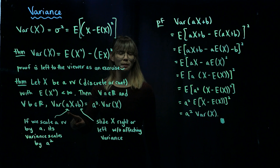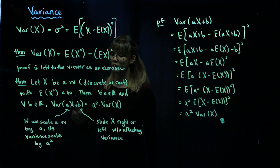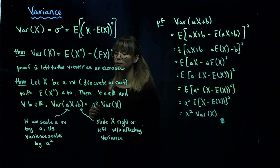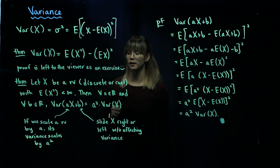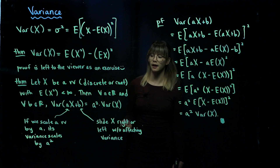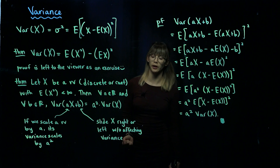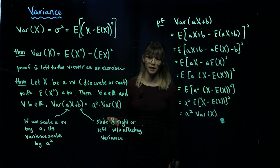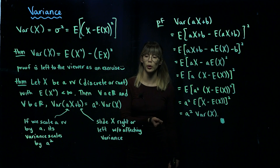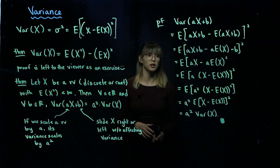So the variance of aX plus b only involves a and not b. The way to interpret the a part is: if we scale a random variable by a, then its variance is going to be scaled by a squared.